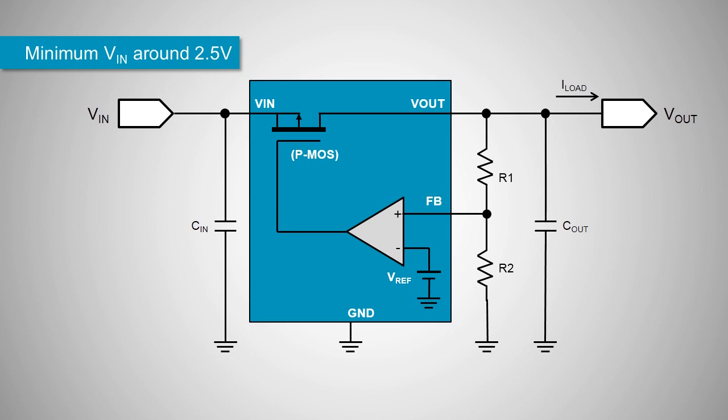When the output voltage drops due to increased load or lower input voltage, the error amplifier lowers the gate voltage with respect to the source. This increases the conduction level of the p-MOSFET and the output voltage rises again to the original regulated voltage.